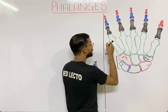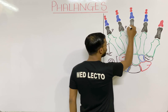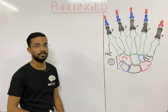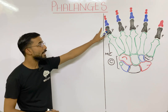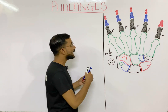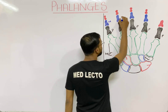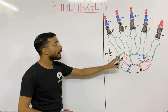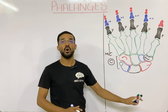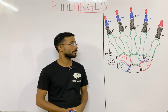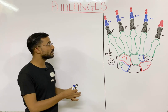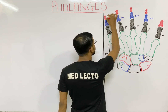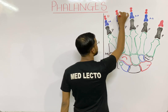Next you will see the middle phalanges — M for middle. In each finger you will see the presence of the middle phalanges, but in the thumb there is no middle phalanges. And last you will see the distal phalanges, which are far from the metacarpal.